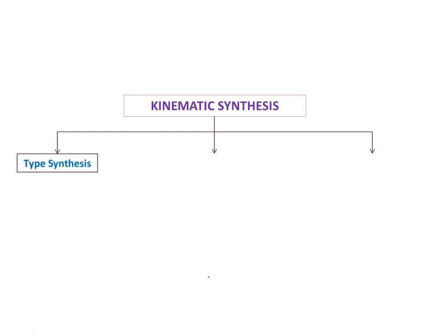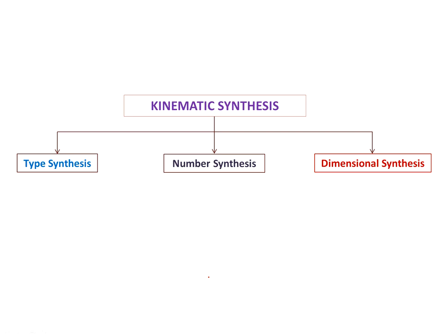We can broadly classify kinematic synthesis into three problems: type synthesis, wherein you choose a kind of mechanism such as a cam or gear that suits the idea; number synthesis, where you identify the number of links or teeth required; and dimensional synthesis, where you determine the dimensions of the different links employed in the mechanism. Our focus will be mainly on dimensional synthesis, where I assume the type and number of links are already known and I only need to find the required lengths.